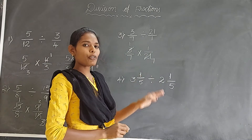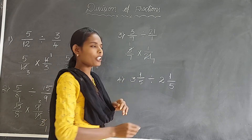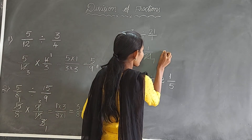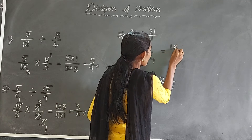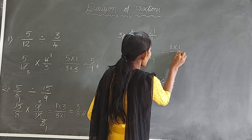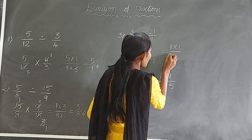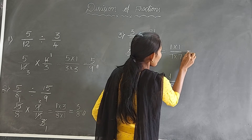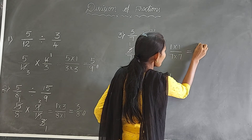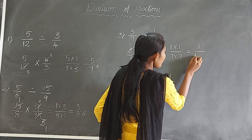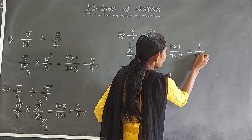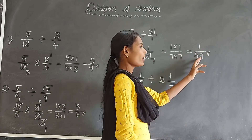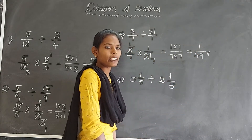Now we multiply the numerators and denominators: 1 into 1 by 7 into 7. 1 ones are 1, and 7 sevens are 49. The answer is 1 by 49.